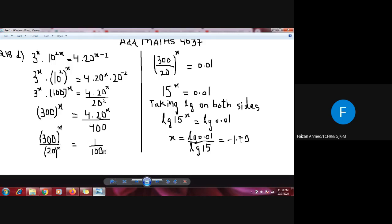1 upon 100 is basically 0.01. Since the powers are same, I can use the law of indices and write the power once. This simplifies to 15 to the power x equals 0.01, since 300 divided by 20 is 15.